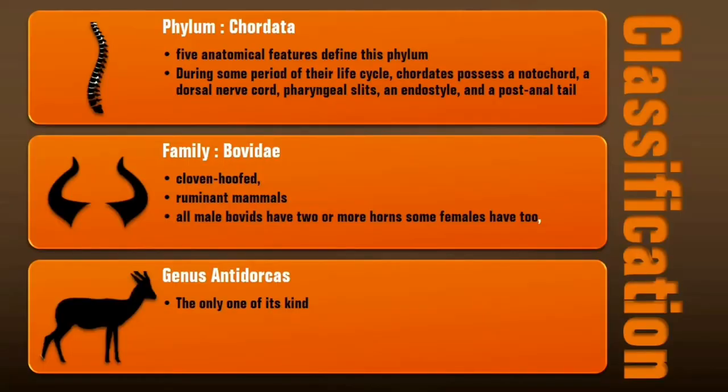Biodiversity is the word used to describe the variety of organisms found on earth. These organisms adapt to survive in their environment. Scientists organize all known life forms into a human-made classification system by arranging them into groups that have similar characteristics.